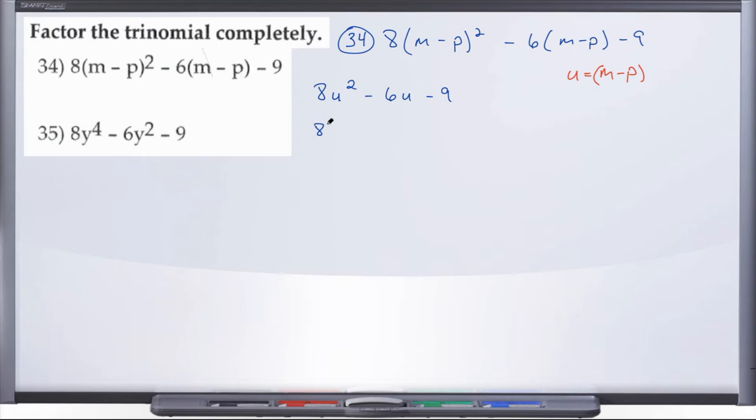We're going to go ahead and use the scissors method, tried and true. So we're looking for factors of 8, factors of 9. So we have 1 and 8, 2 and 4, and then our factors of 9, 1 and 9, 3 and 3.